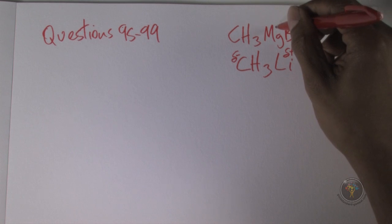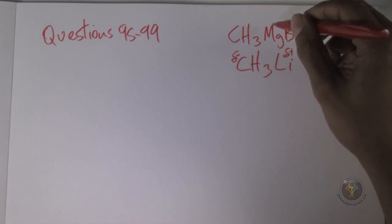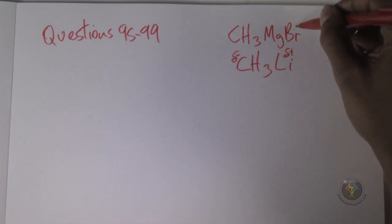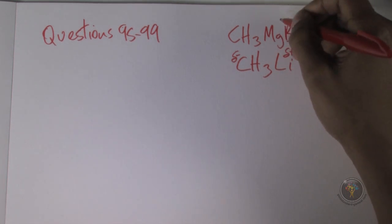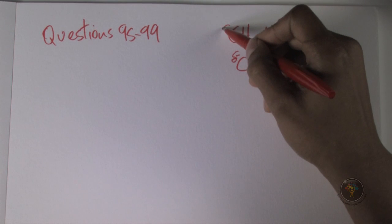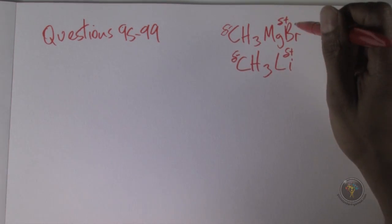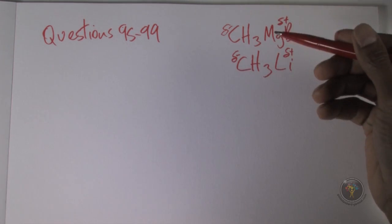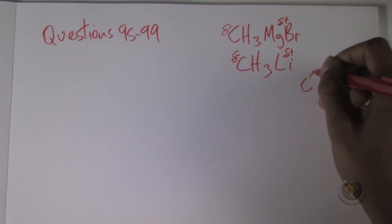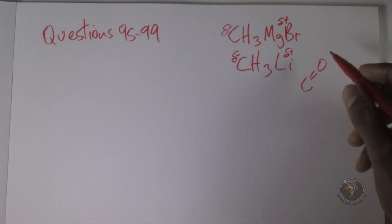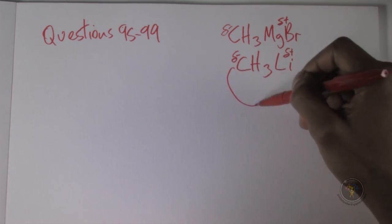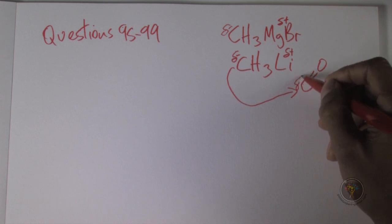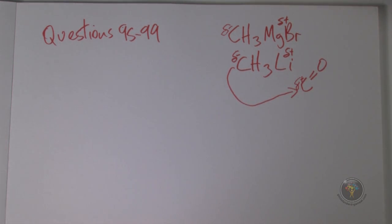Magnesium-bromine does the same thing lithium does. Lithium has an oxidation number of +1, magnesium +2, bromide -1, so it acts like +1 just like lithium. This makes magnesium delta-positive and carbon delta-negative. The magic of Grignard reagents and alkyl lithiums is that they generate delta-negative carbons, allowing carbon-carbon bond formation because opposites attract.